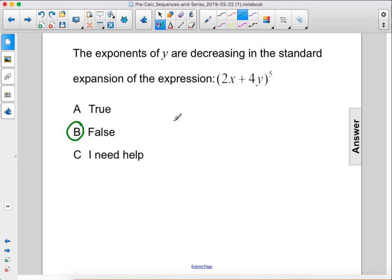For example, the first term is going to have x to the 5th power, y to the 0 power. The next term is going to have x to the 4th, y to the 1st. Then the next one will have x to the 3rd, y squared.